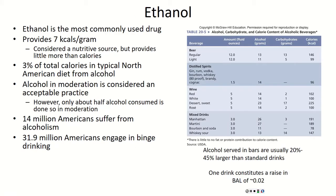Ethanol is the most commonly used drug, especially in the United States. It provides calorie content — seven kilocalories per gram — but we don't consider it a nutritive source. About 3% of total calories in the typical North American diet comes from alcohol. The big numbers: 14 million Americans suffer from alcoholism, and around 32 million engage in binge drinking on routine occurrences like Friday nights. There's also a table here showing how much quantity we find for different beverages and how large those quantities are for a standard drink.